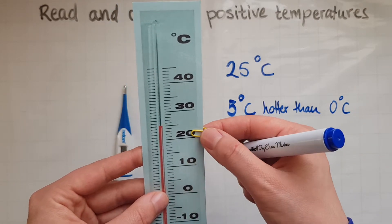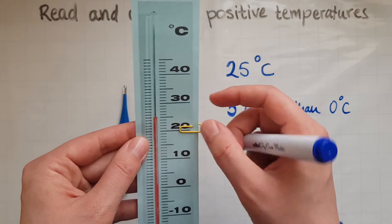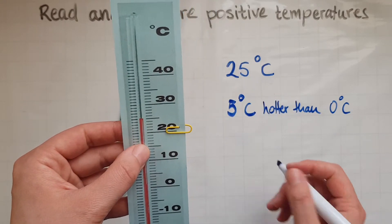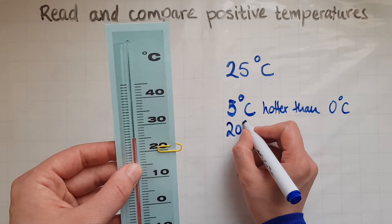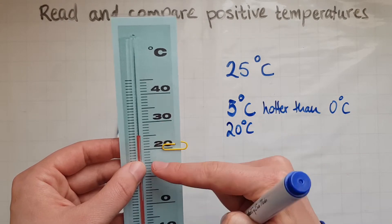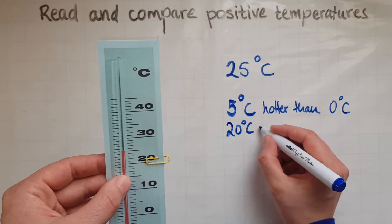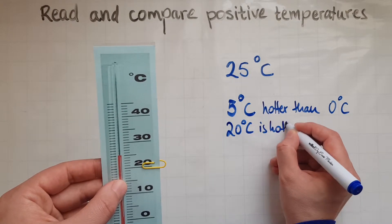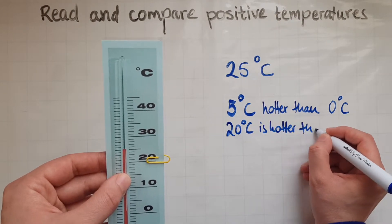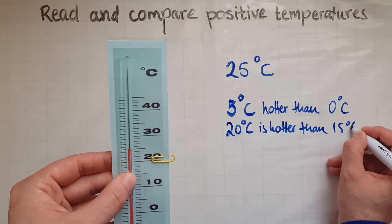And let's compare some other ones. Look at 20 and then 15. Again, 20 degrees Celsius is hotter because it's higher in the scale than 15.